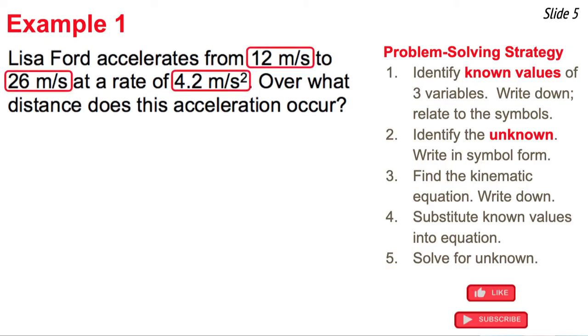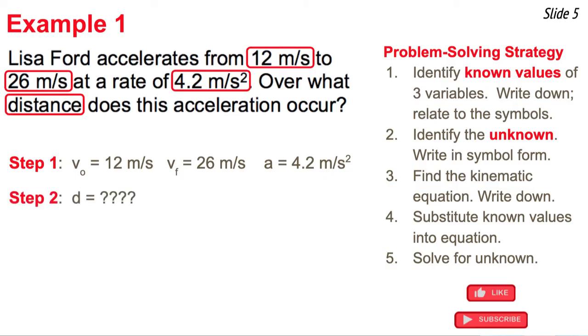Now you have to relate them to the symbols in the kinematic equations. So the 12, the 26 are both velocities. We know that by the unit. The original velocity is 12 and it accelerates to a final velocity of 26. And the 4.2 is the acceleration rate. We know that because of the units. So we write that down. The second step of the equation is to identify the unknown. The problem continues and says over what distance does this acceleration occur. So I'm going to write down the unknown. It's the distance. I write it in simple form.